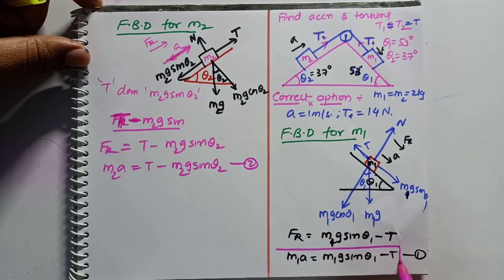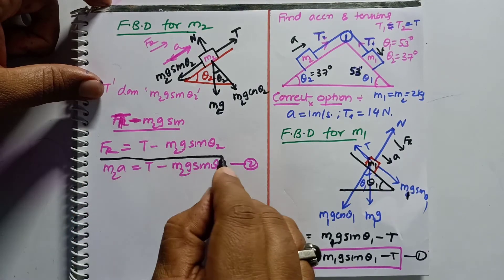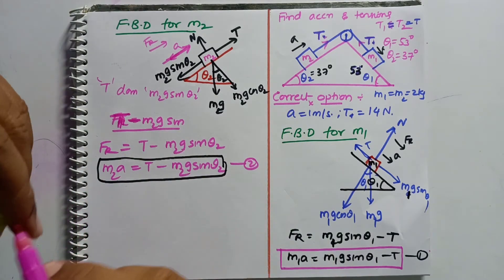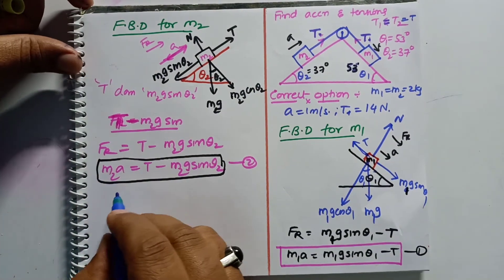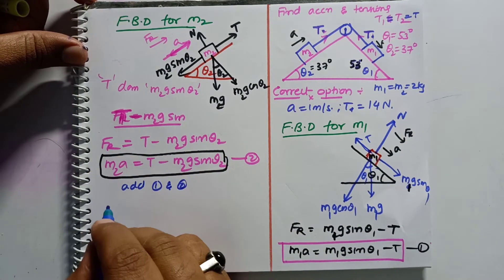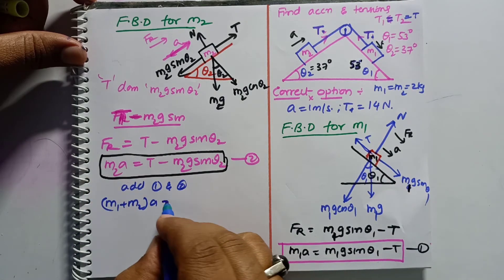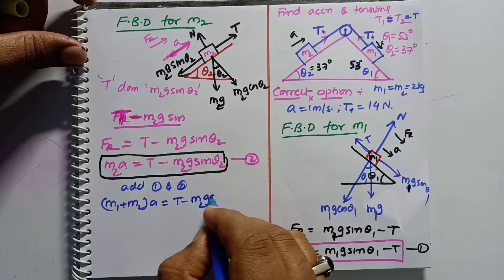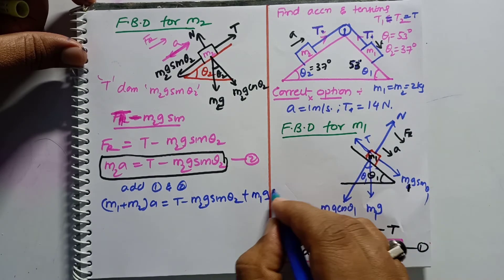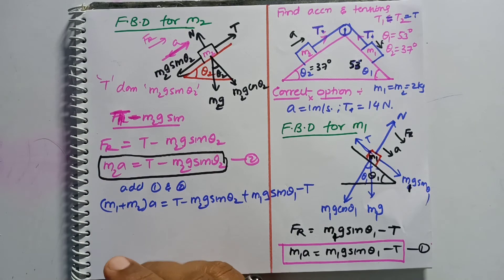So equation 1 is m1·a = m1·g·sinθ1 − T, and equation 2 is T − m2·g·sinθ2 = m2·a. Our aim is to find acceleration, so we add equations 1 and 2 together.